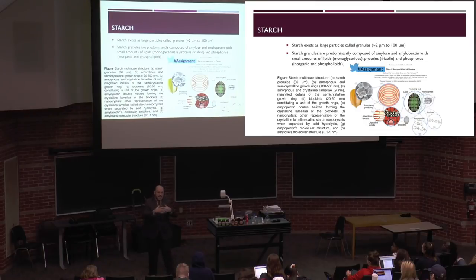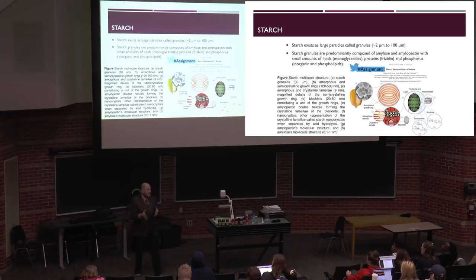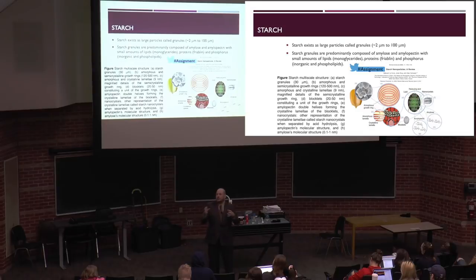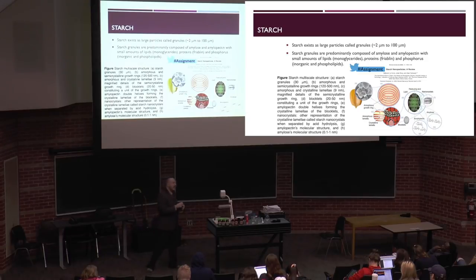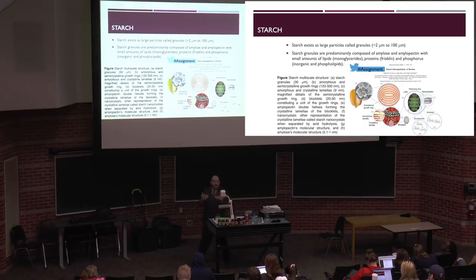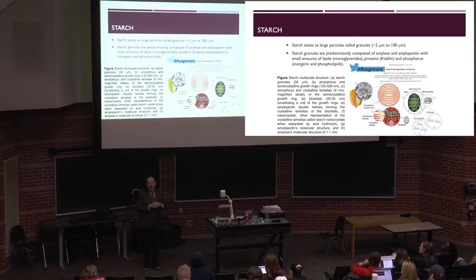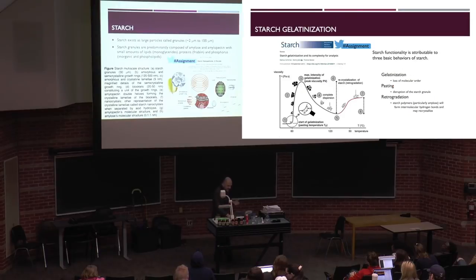Just like water is most dense at four degrees, starch granule molecules have very strong hydrogen bonds at that temperature. To break those bonds, we heat the granule up, decreasing the strength of the dipole moment on the hydroxyl group, weakening the hydrogen bond strength and the non-covalent interactions. When we heat starch, we want water to imbibe into that crystal structure, further weakening amylose-amylose interactions so the starch granules swell.